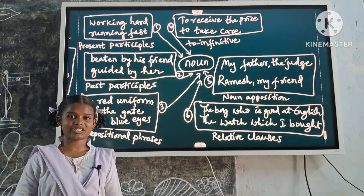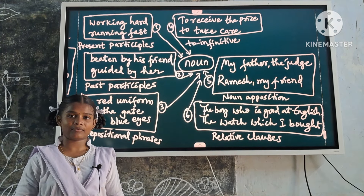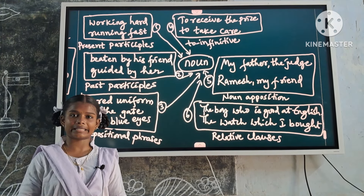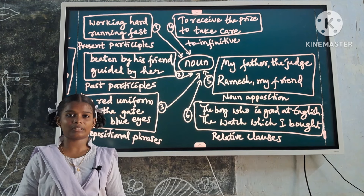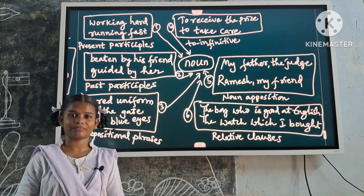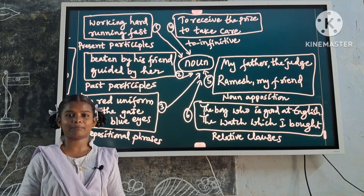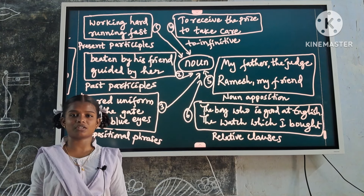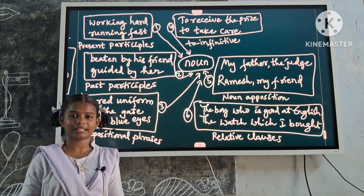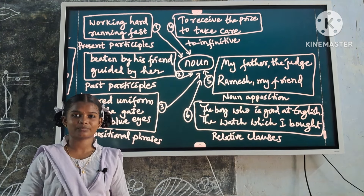In short, a word or a group of words which describes the noun is called a noun modifier. Noun modifiers may be pre-modifiers or post-modifiers. Thank you.